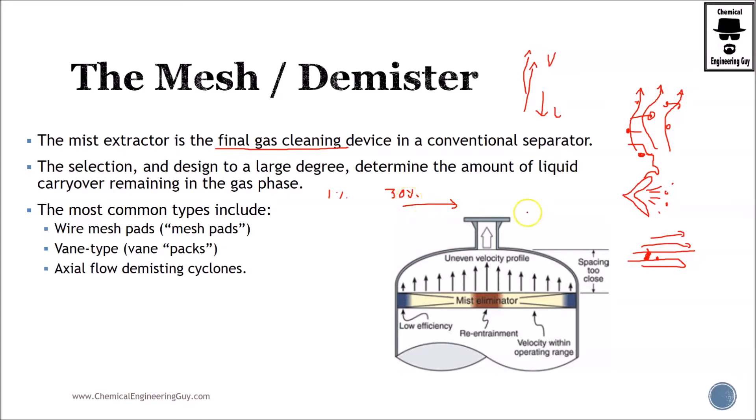The most common types you will encounter are the wire mesh pads (so-called mesh pads), vane-type or vane packs, and axial flow demisting cyclones. What I encounter most is the wire mesh pad, which is nothing more than a kind of wire filter.